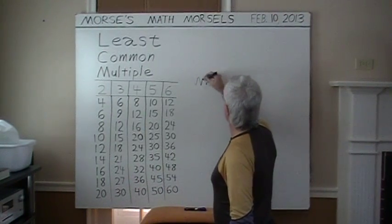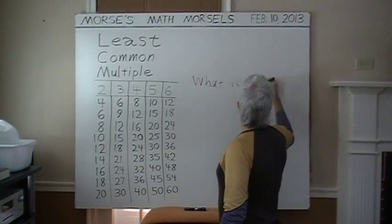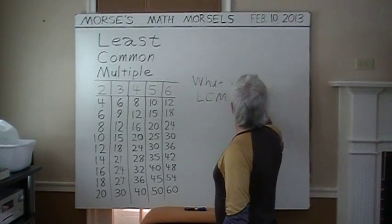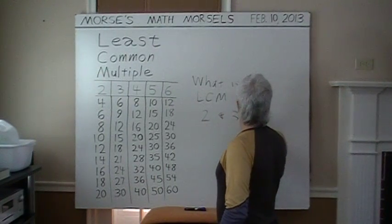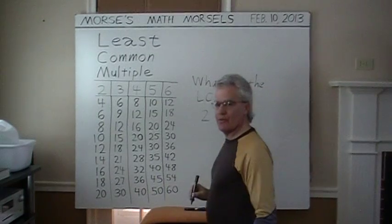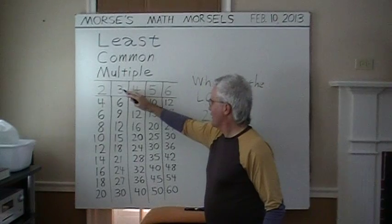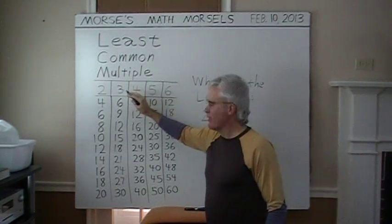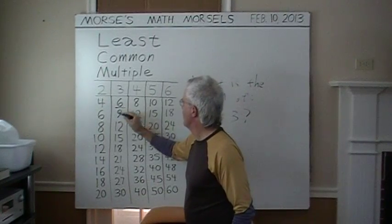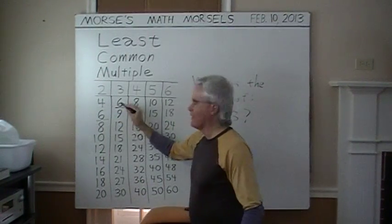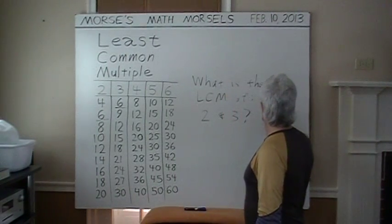So check the two times tables and the three times tables from the top at the least numbers and count along until we find a six here and a six here. No smaller numbers are in both tables, so six is the LCM.